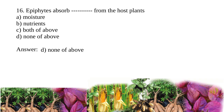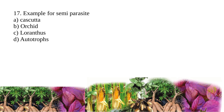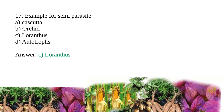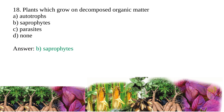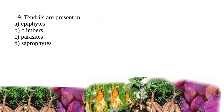The answer is none of the above. Question 17: example for semi-parasite — Cuscuta, orchid, Loranthus? The answer is Loranthus. Plants which grow on decomposed organic matter are called — saprophytes, parasites, or none? The answer is saprophytes.